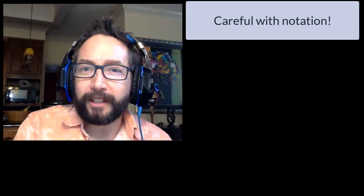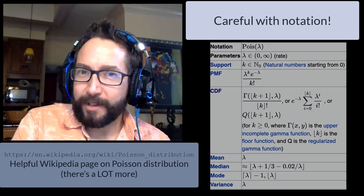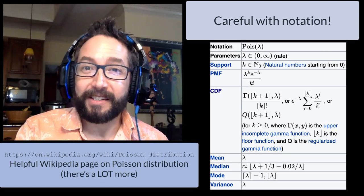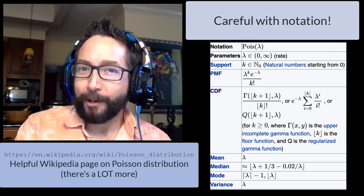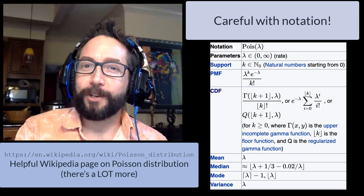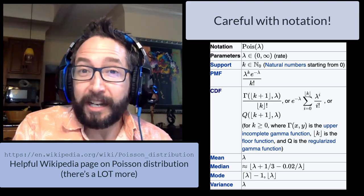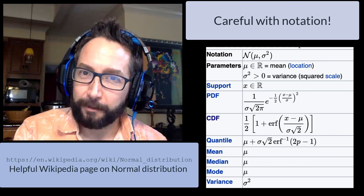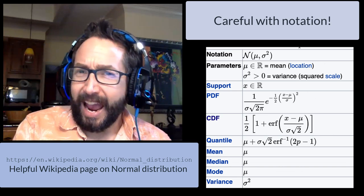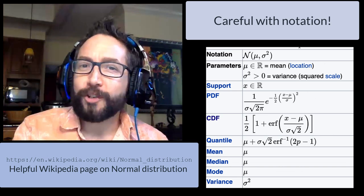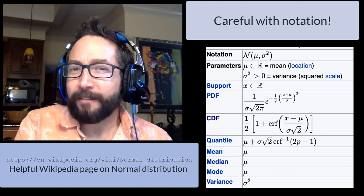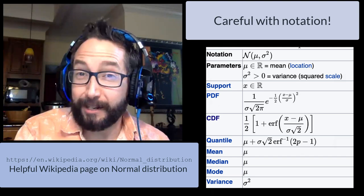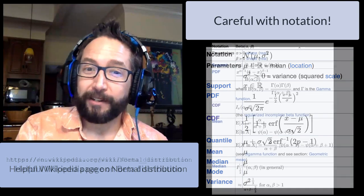First, a little bit about notation. No one's going to expect you to remember all of the ins and outs and details about all of these distributions in the Notorious Zoo. You'll need to look up those properties on Wikipedia or some other resource. I wanted to make sure you're aware of some rather infuriating notation choices that people decided to make over the years.